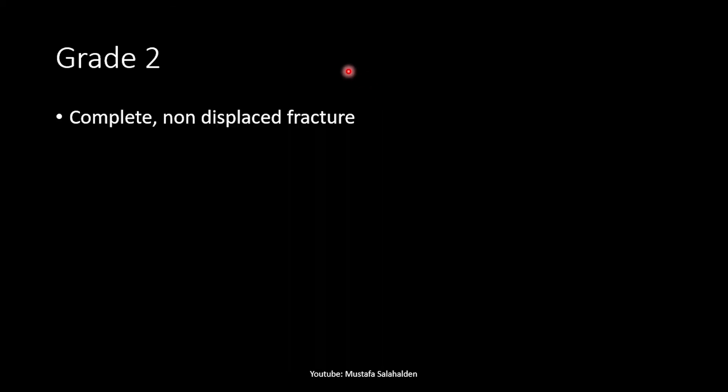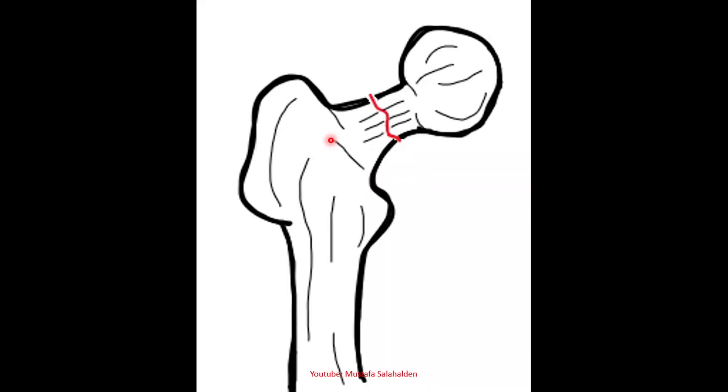In grade two there is a complete non-displaced fracture — so grade one is incomplete non-displaced, while grade two is complete non-displaced. As shown right here, there is a complete fracture that is non-displaced.